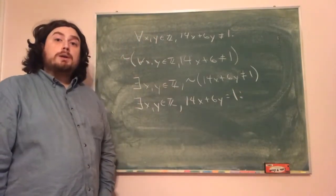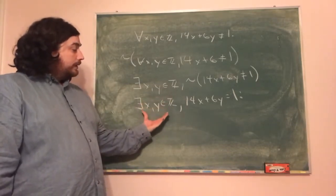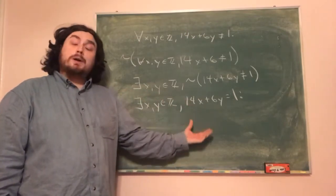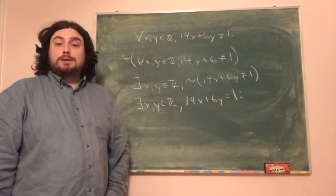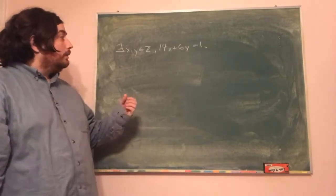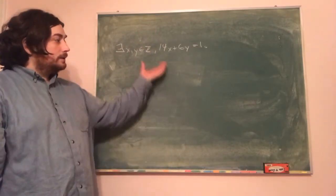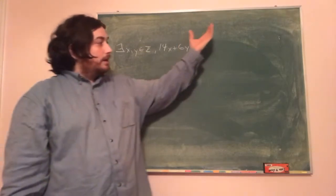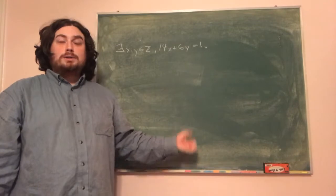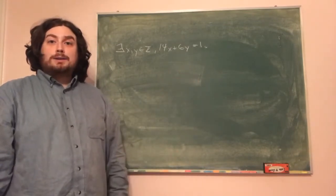If we want to proceed by a proof by contradiction, we're going to assume that there is an x and y that are integers such that 14x plus 6y is equal to 1, and we're going to get some type of contradiction. Since we're proceeding by a proof by contradiction, unlike previous proofs, I don't actually know what I need to show — I just know I need some type of contradiction. So I'll start with what's given and write equivalent statements until I get something that doesn't make sense.